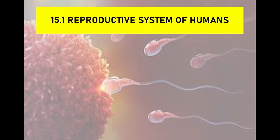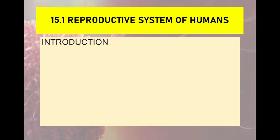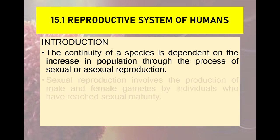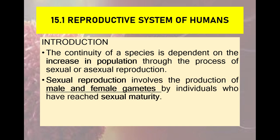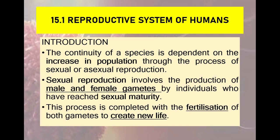As an introduction for this subtopic, we are going to discuss the importance of this system in humans, which is to increase the number of populations of a species. This involves the process of sexual or asexual reproduction. For sexual reproduction, it will involve the production of female and male gametes — the ovum and sperm — when the individual has reached sexual maturity. The process of reproduction is completed with fertilization, forming a new life.